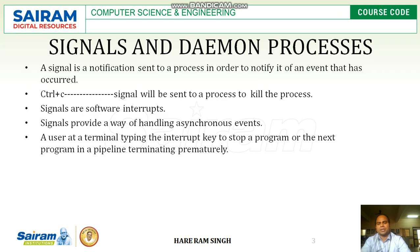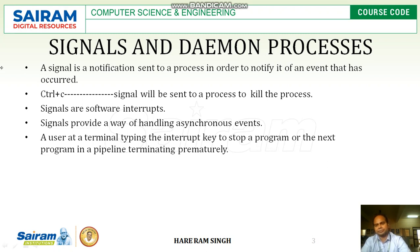A signal is a notification sent to a process in order to notify it of an event that has occurred. Suppose a process is doing some work but the kernel came to know some urgent work needs to be done on that particular process. So the kernel will send a notification to the process, and that process will leave its regular work and react to the notification. This notification is called the signal.